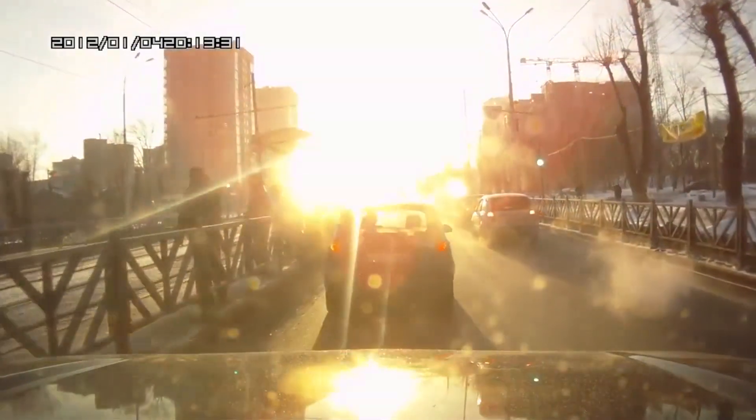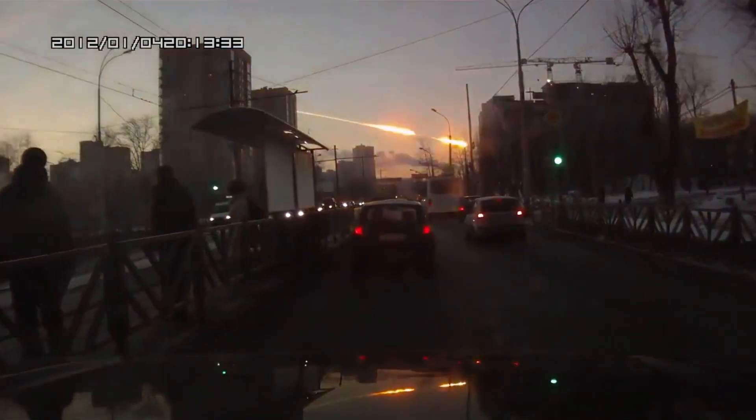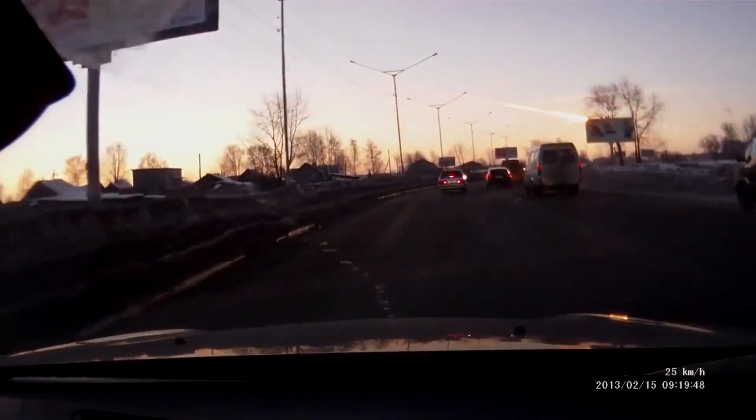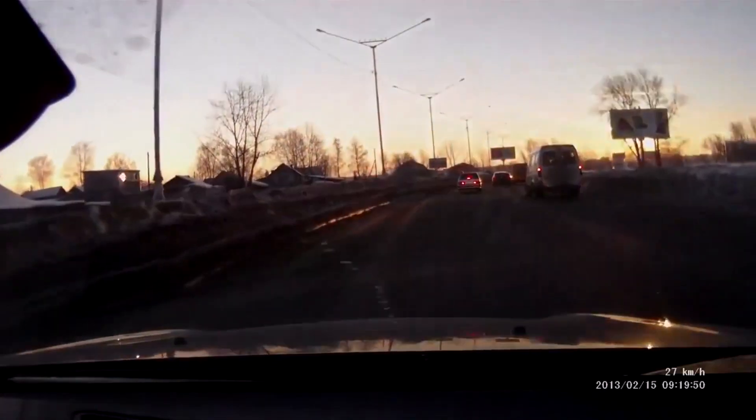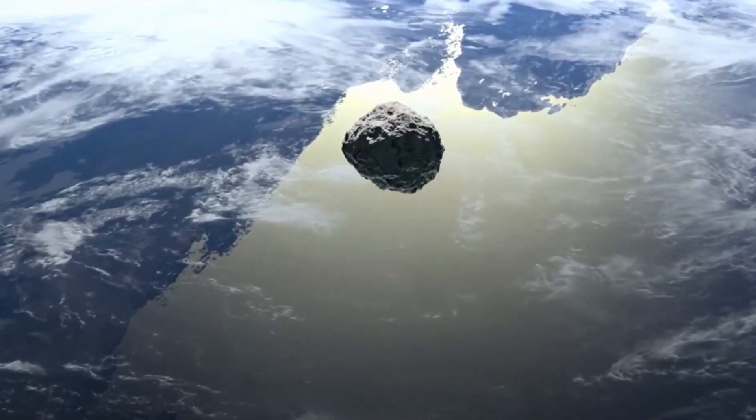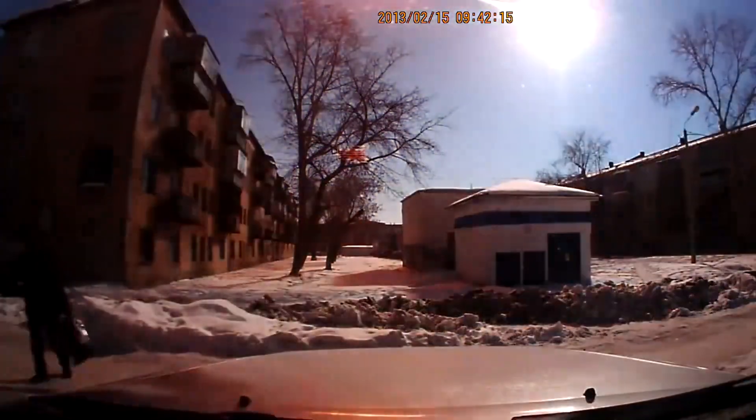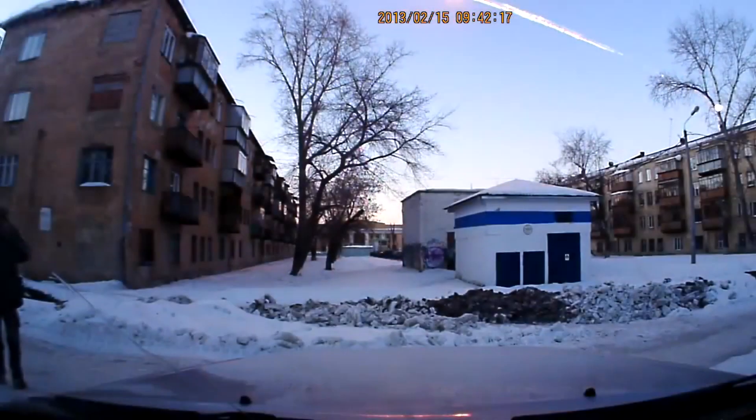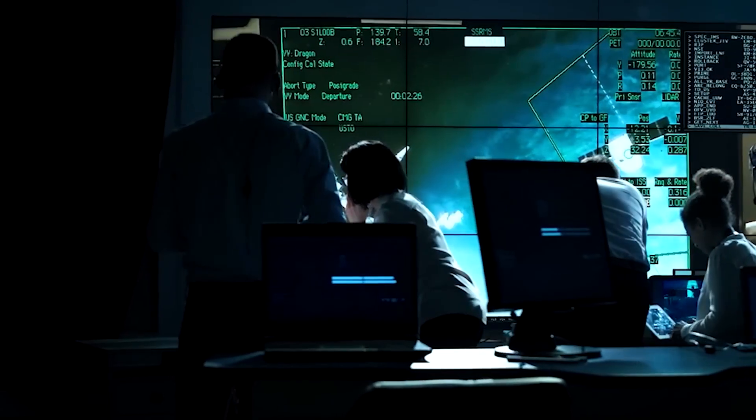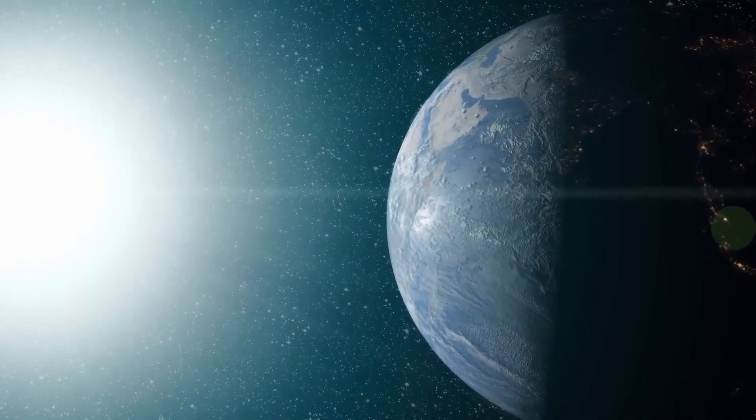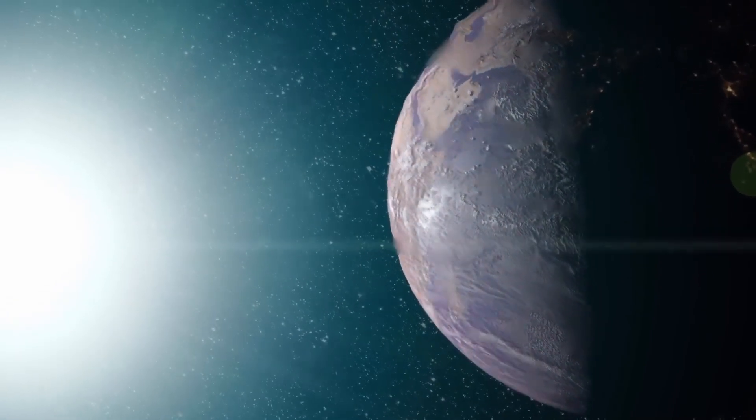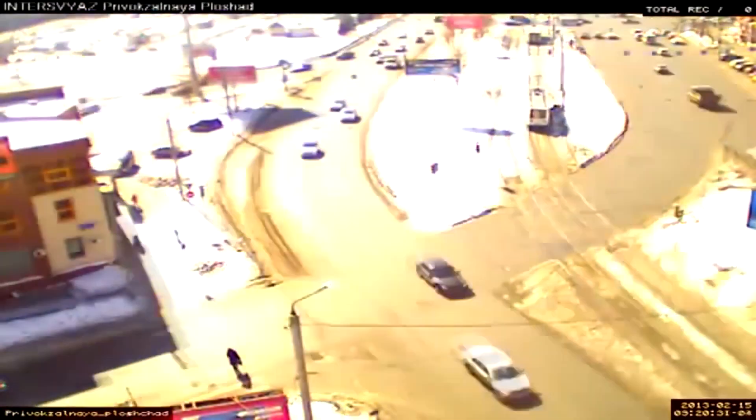On the morning of February 15, 2013, a blinding flash of fire split the sky over the Urals. Residents of several regions saw it, and residents of Chelyabinsk also felt it. They were hit by such a shockwave that almost the entire city was left without windows. On the same day, it became clear.